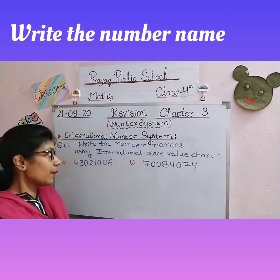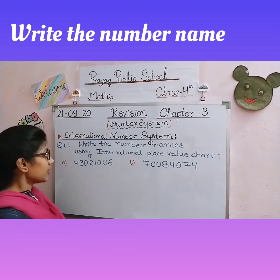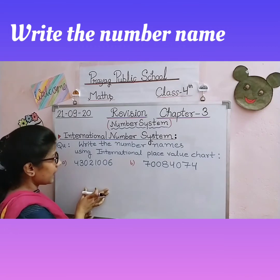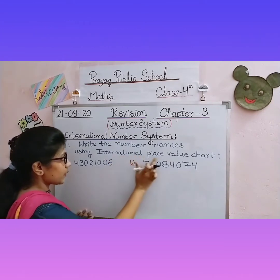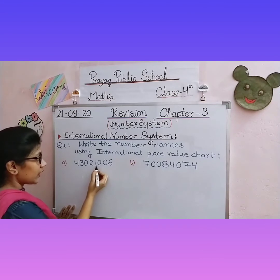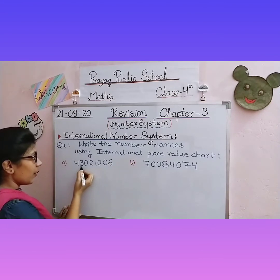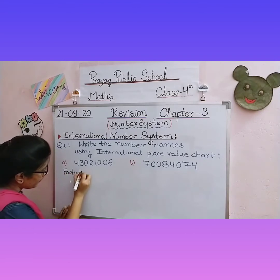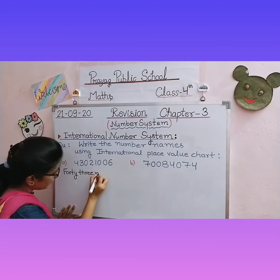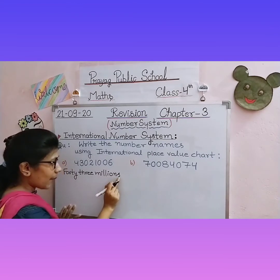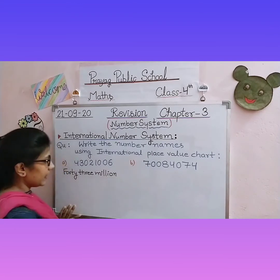The next type of question: write the number name of the given numerals using the International Place Value Chart. First we will put the digits carefully into the chart to avoid mistakes: ones, tens, hundred, thousand, ten thousand, hundred thousand, million, ten million. The first letter will be capital. We get forty-three million. Note: do not write 'millions' — we will not use the plural form, that would be wrong. Always write in singular.